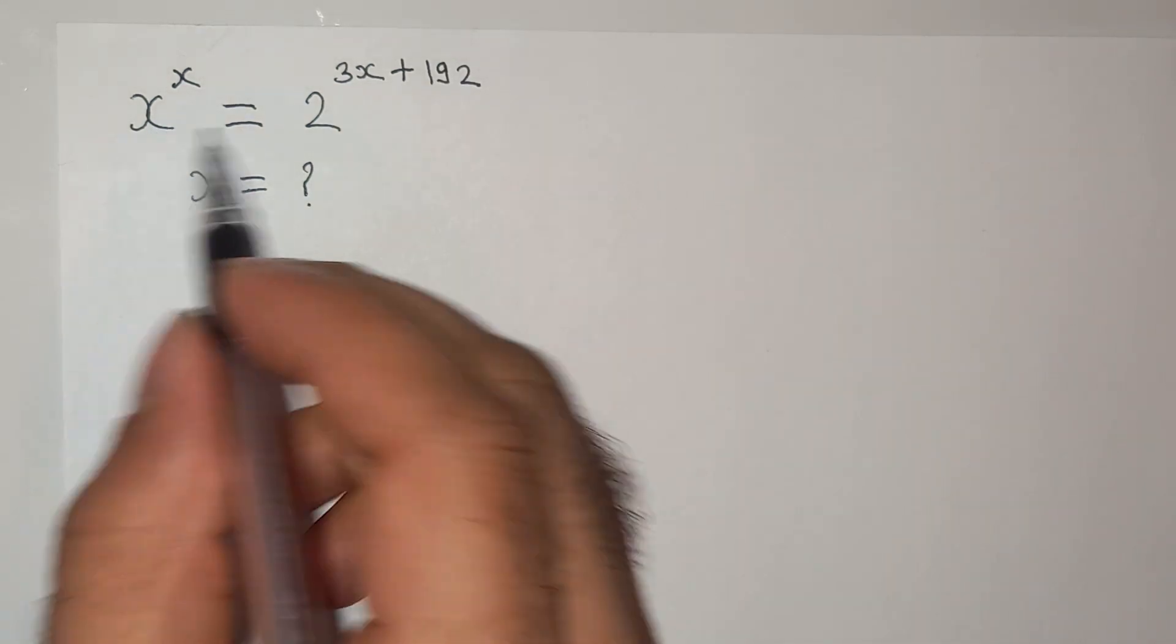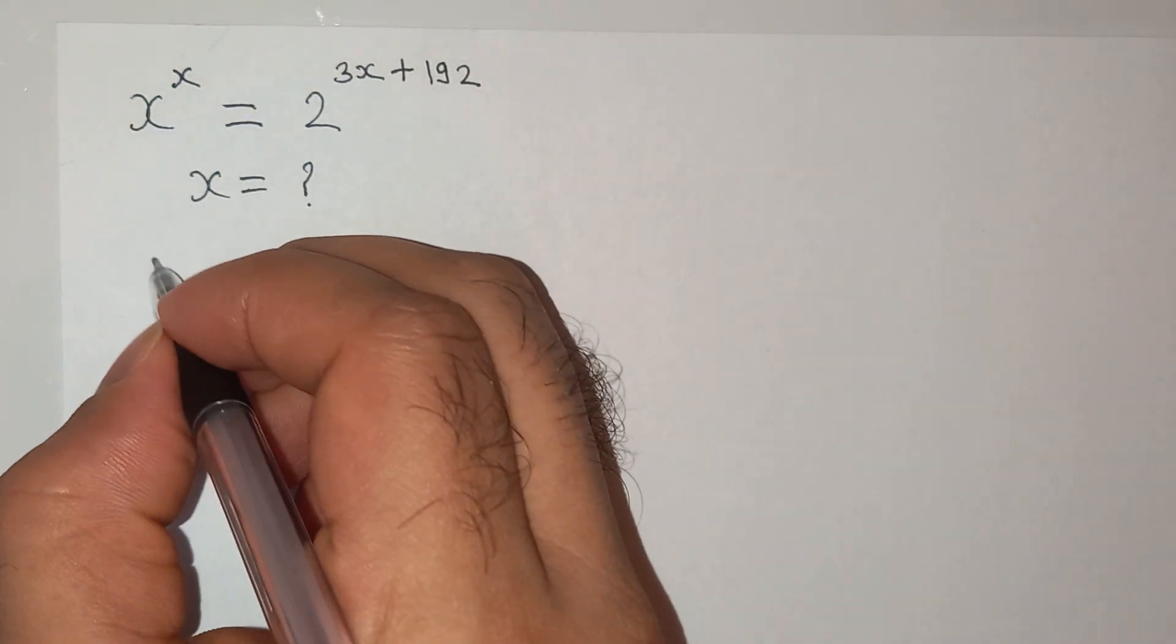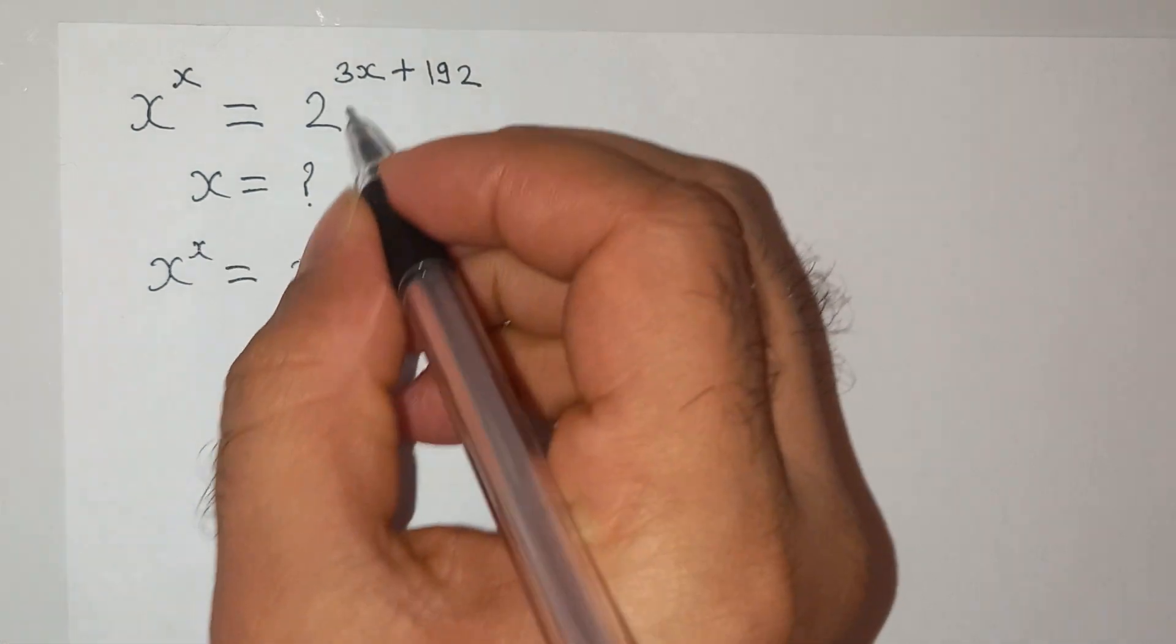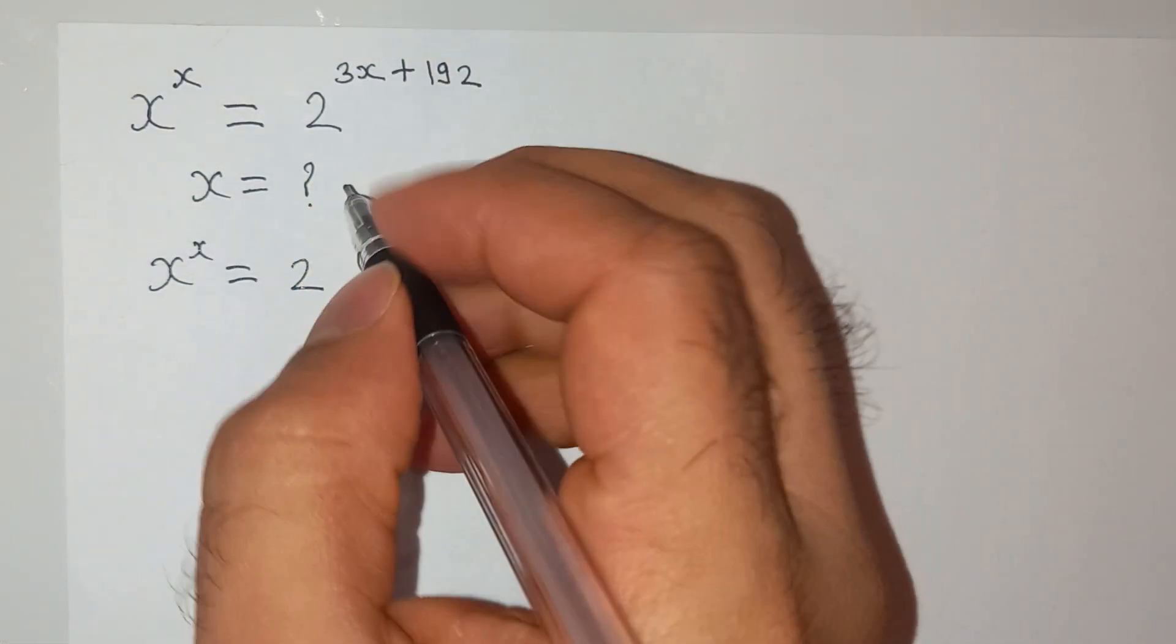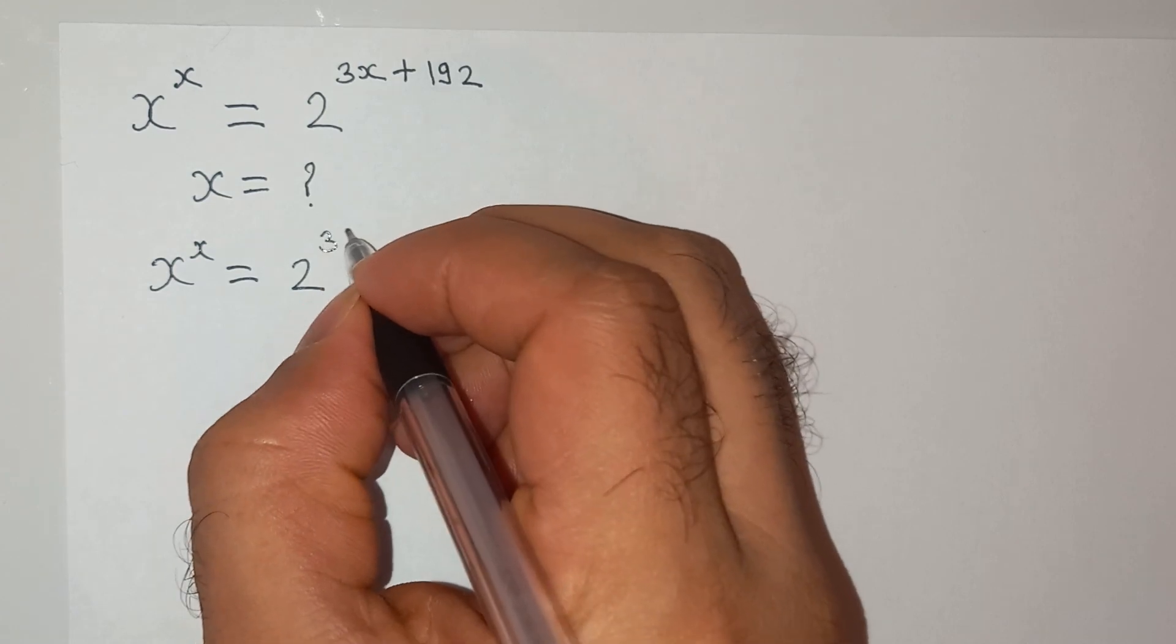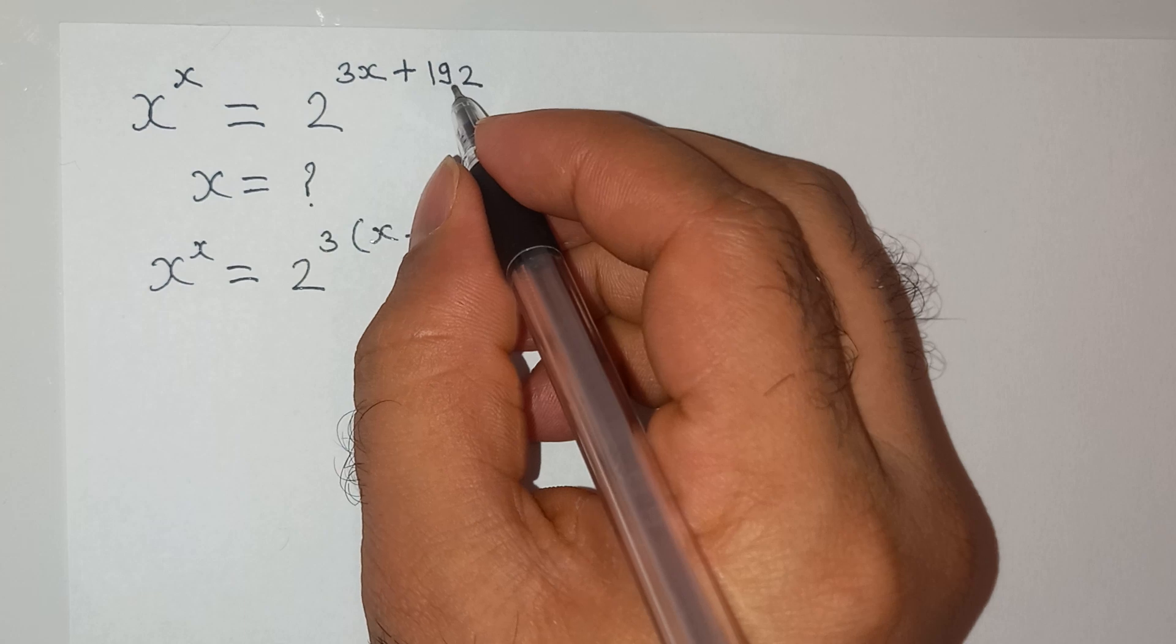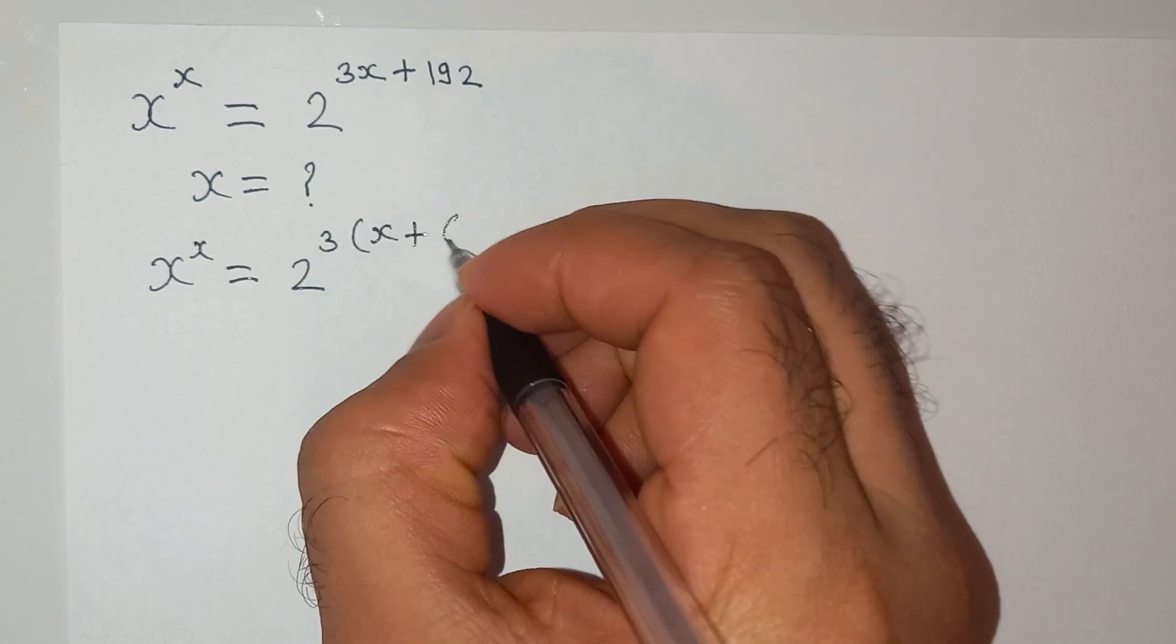So to solve this question I am going to write this as x power x equals to 2, the 3 can be taken as common, 3 bracket x plus, and 192 divided by 3 is 64.